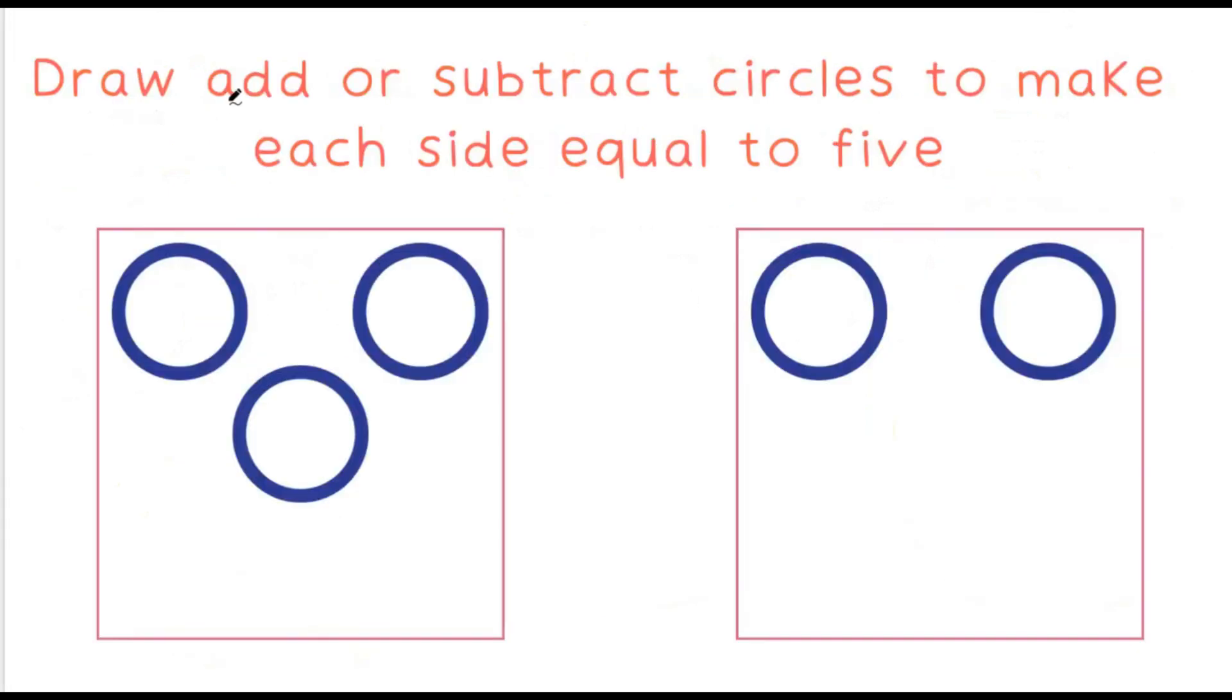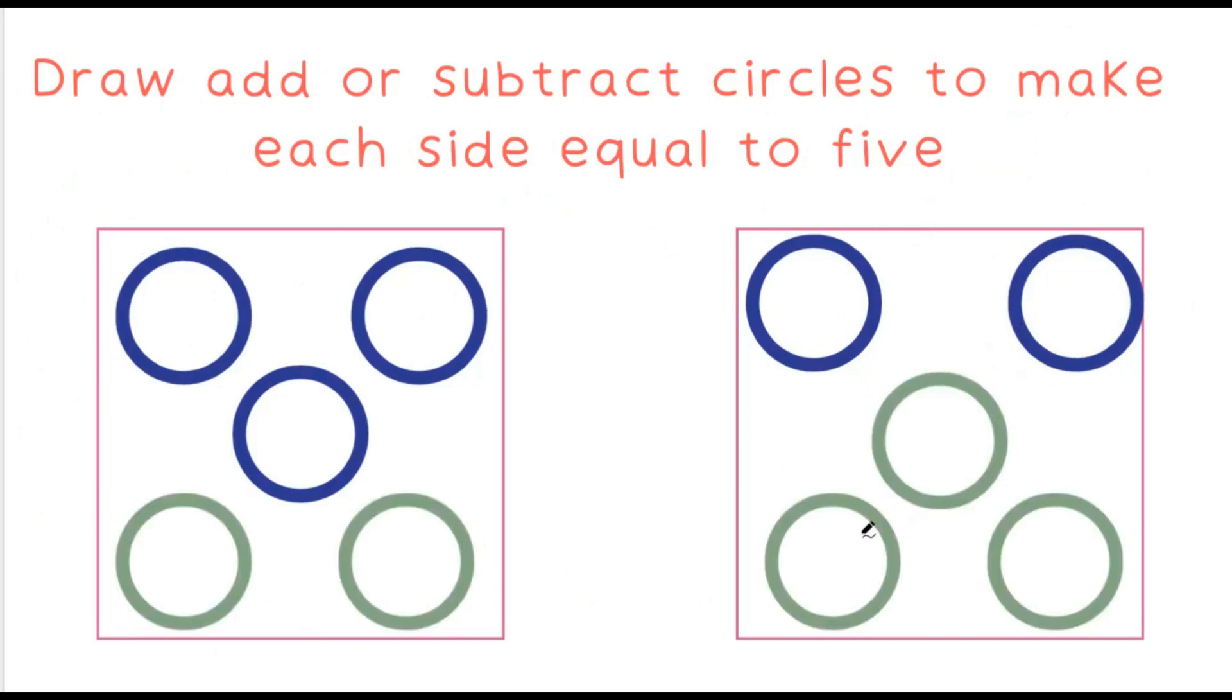Draw, add or subtract circles to make each side equal to 5. In our first square we have 3 circles. In our second square we have 2. How many do we have to add to each square? To our first square we add 2. To our second square we add 3. Until next time goodbye. Bye!